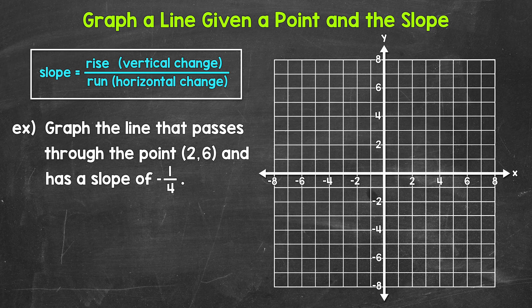Let's jump into our example where we have graph the line that passes through the point (2, 6) and has a slope of negative 1 over 4, or negative 1/4. Now, our first step is to plot the point. So we need a point at (2, 6).